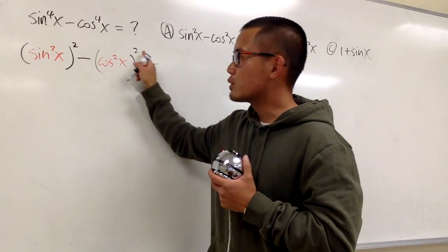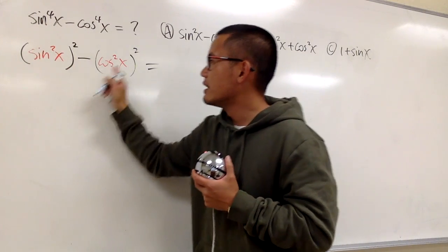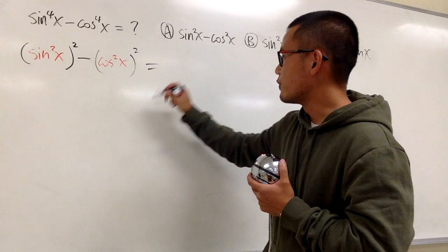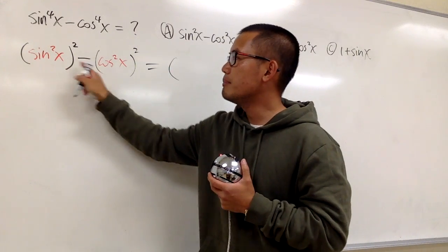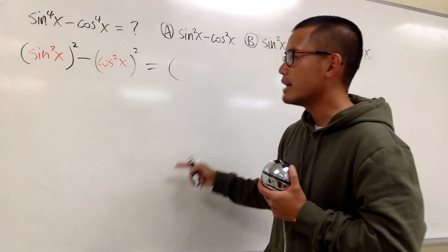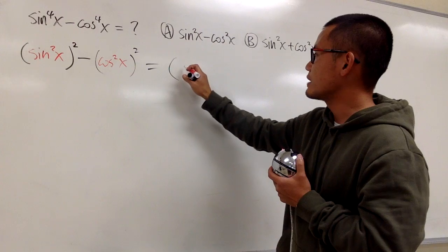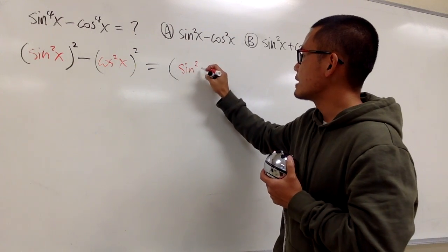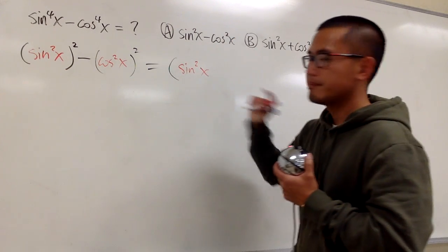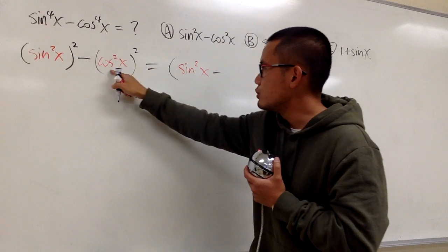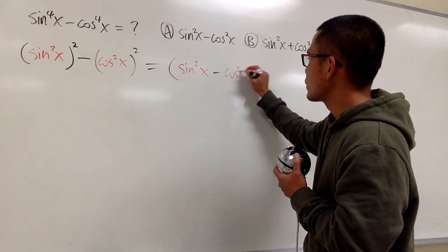A square minus b square, this is the a, this is the b. We know the formula will be a minus b times a plus b. So, that's the formula to factor that out. Let's write that down. Sine square x for the a, and then we minus the b, which is that, cosine square x.